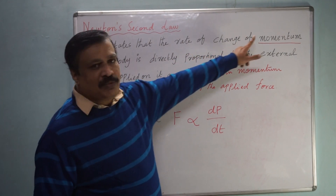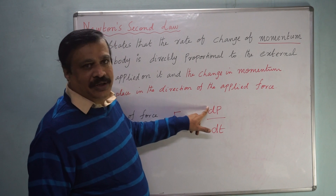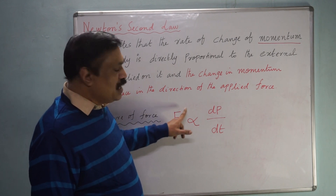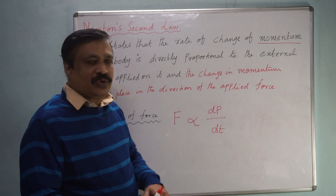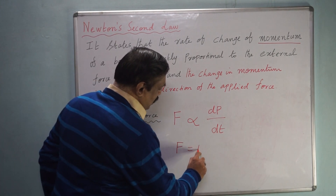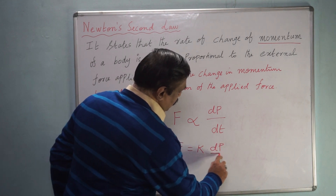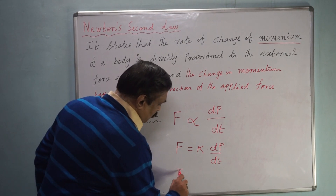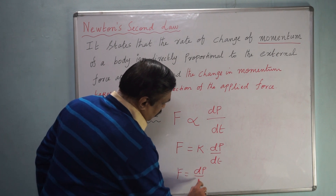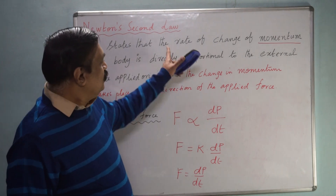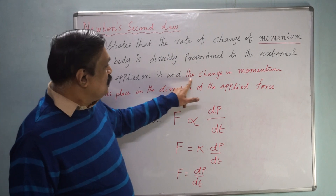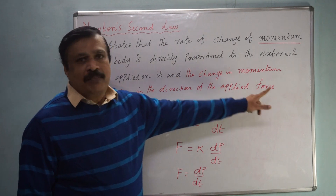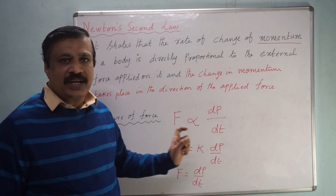Rate of change of momentum is proportional to the external force applied. Now to convert proportionality into an equation, you put a constant k — F equals k dp by dt. If you take k equal to one, then simply F equals dp by dt. This is the equation for Newton's second law. And the change in momentum takes place in the direction of the applied force.